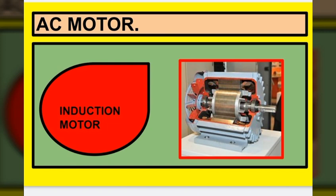The first AC motor type is the induction motor. This is the pictorial representation of an induction motor. An induction motor is a motor which works based on the induction principle, which is why it is called an induction motor. Topics such as what is induction and what is slip will be covered in future videos.